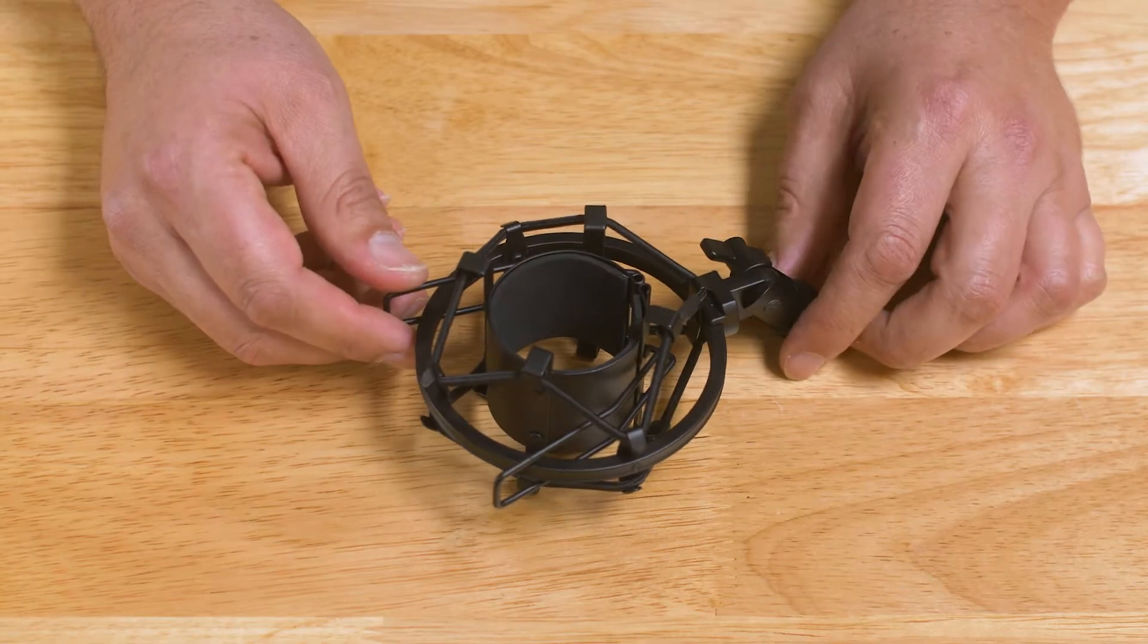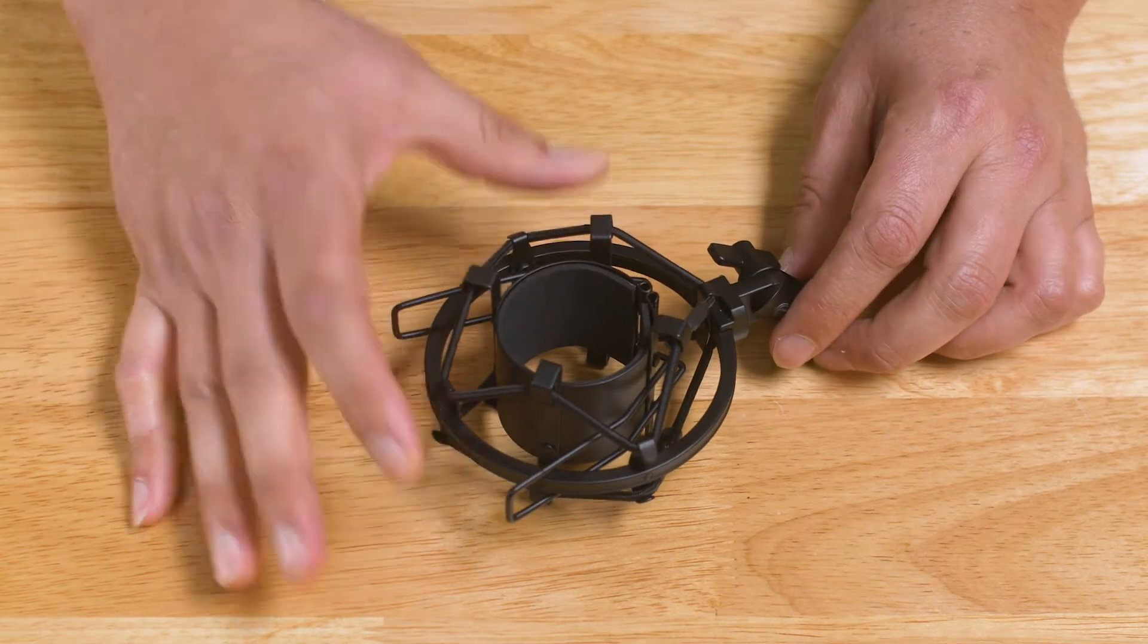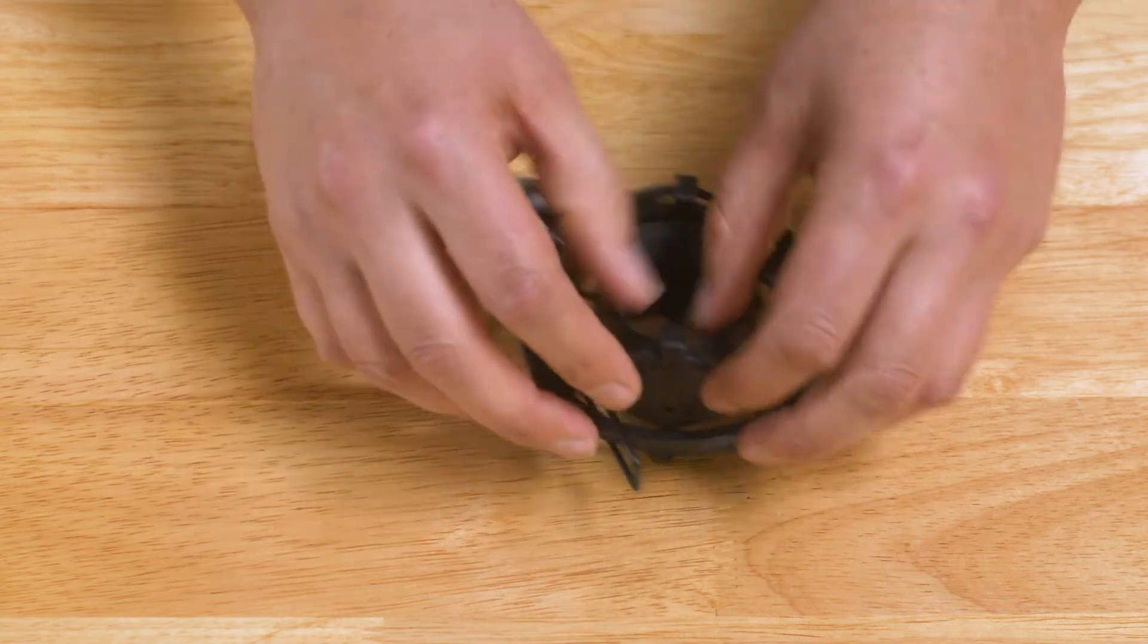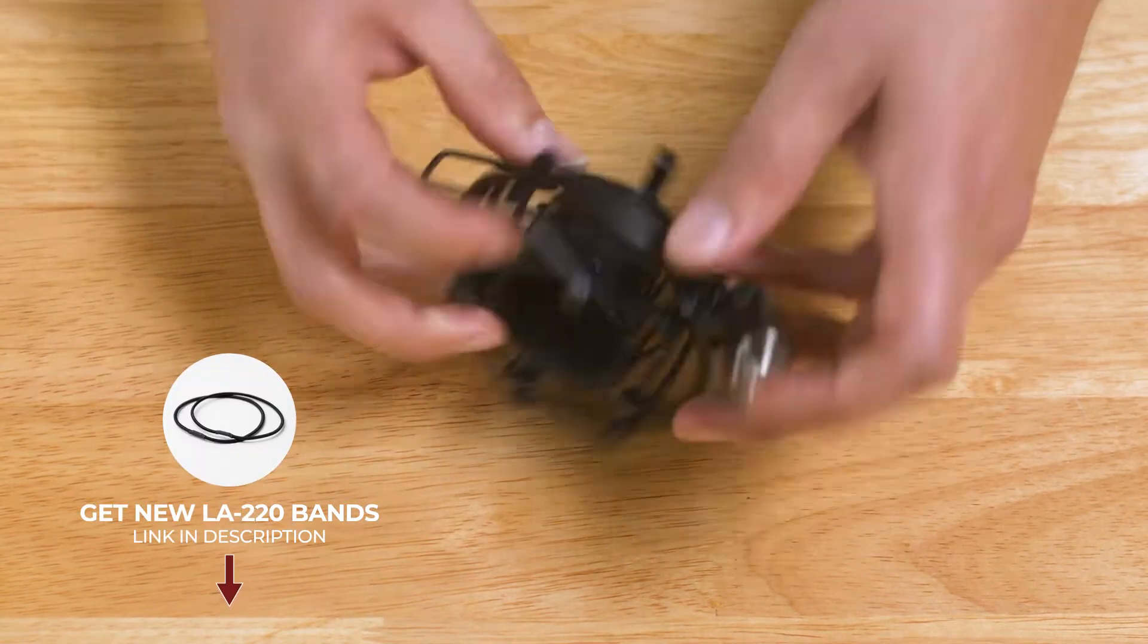So first off, to remove the bands, I like to unhook it from the inner cage. I call this the outer cage, I call this the inner cage. So unhooking it from the inner cage, and then I flip it over.